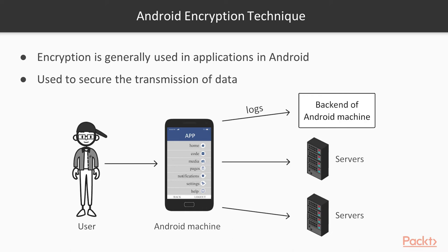Data packets will travel from the device to the server and back. It depends on what kind of data packets they are — if they are encrypted, they are secure; if they are not encrypted, they are not secure. For example, if data packets are going from A to B and they are using encryption, no one can perform a man-in-the-middle attack, no one can steal or read the data in between.